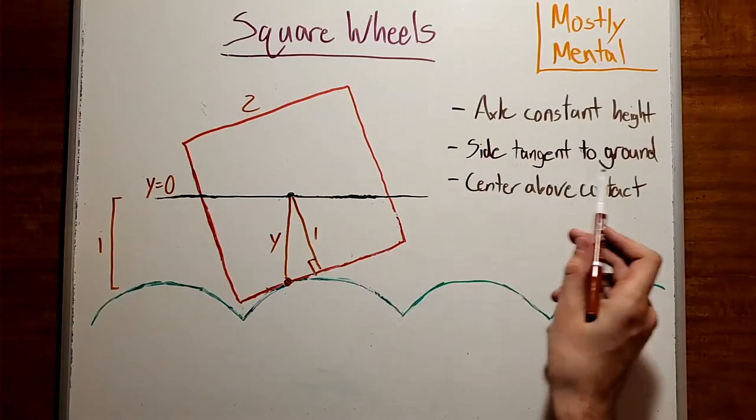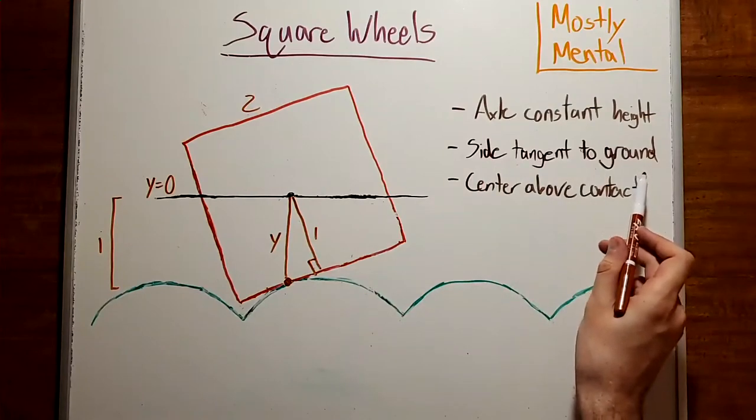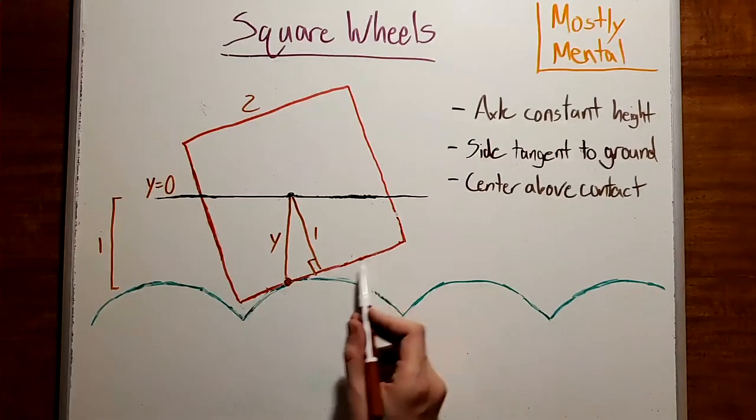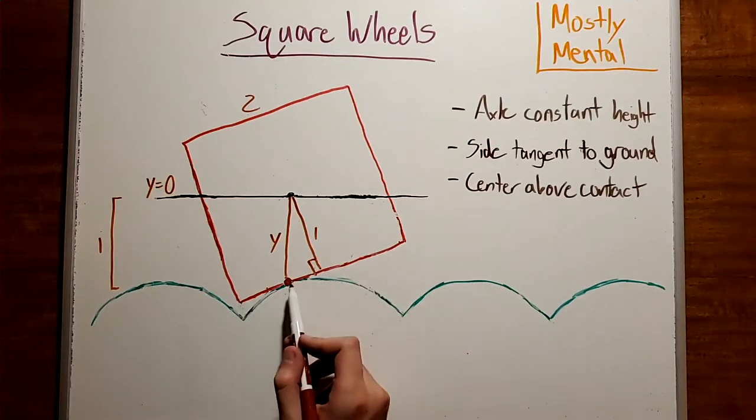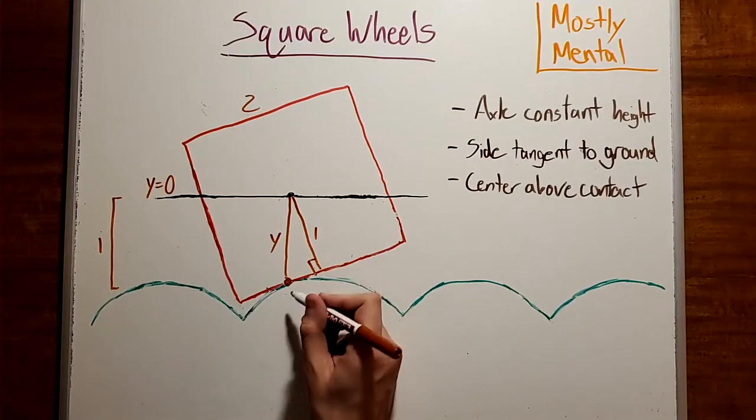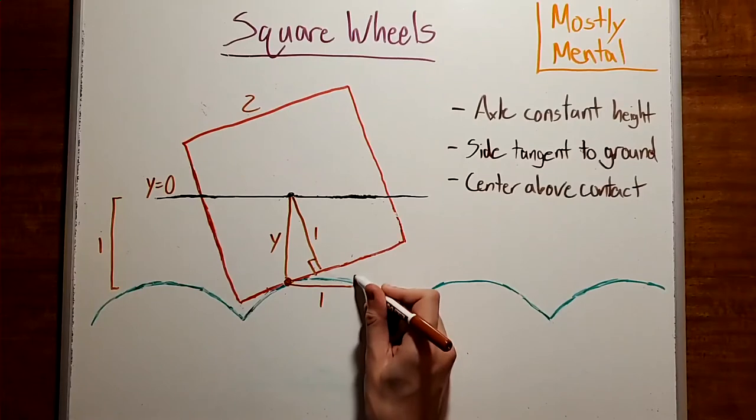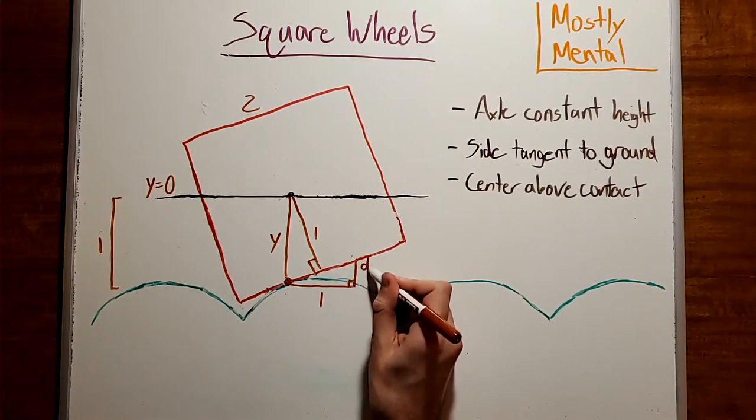And as we said a moment ago, the side of the square is tangent to the ground, which means the slope of this line must be the derivative of the curve at this point. In other words, for every 1 unit over, we have to go dy dx up.